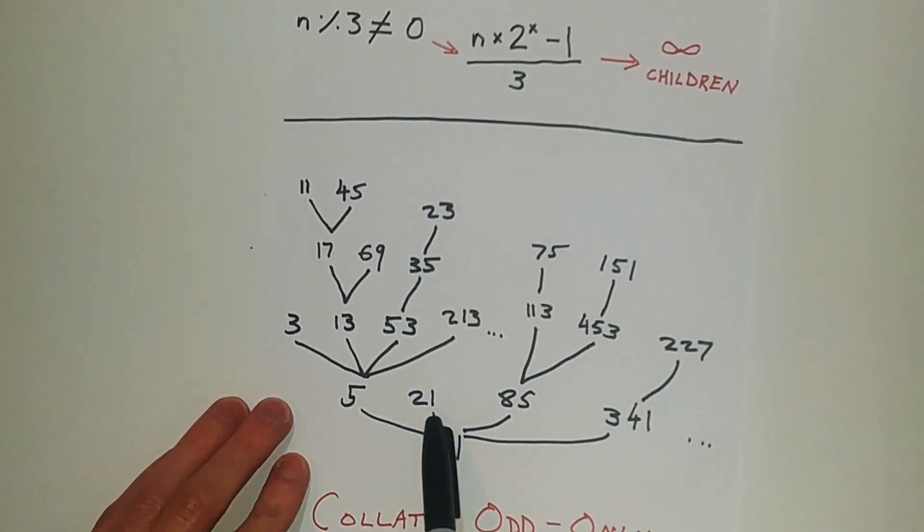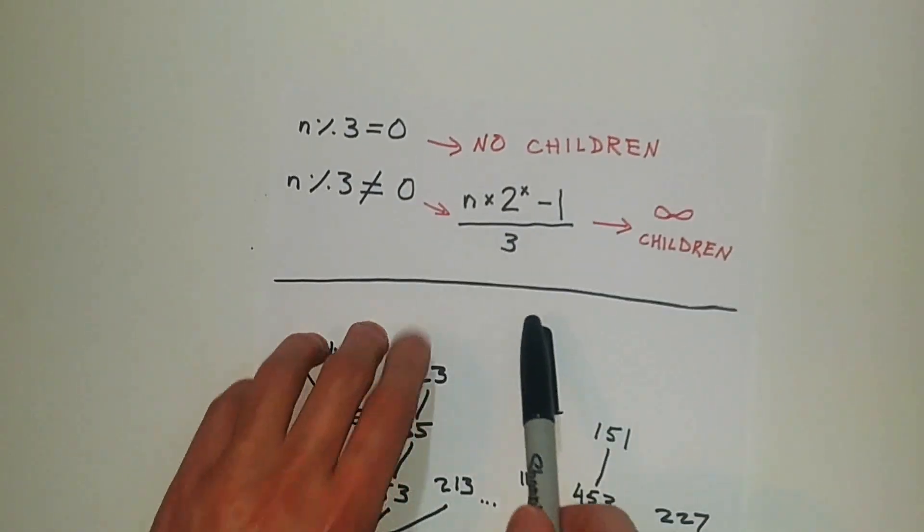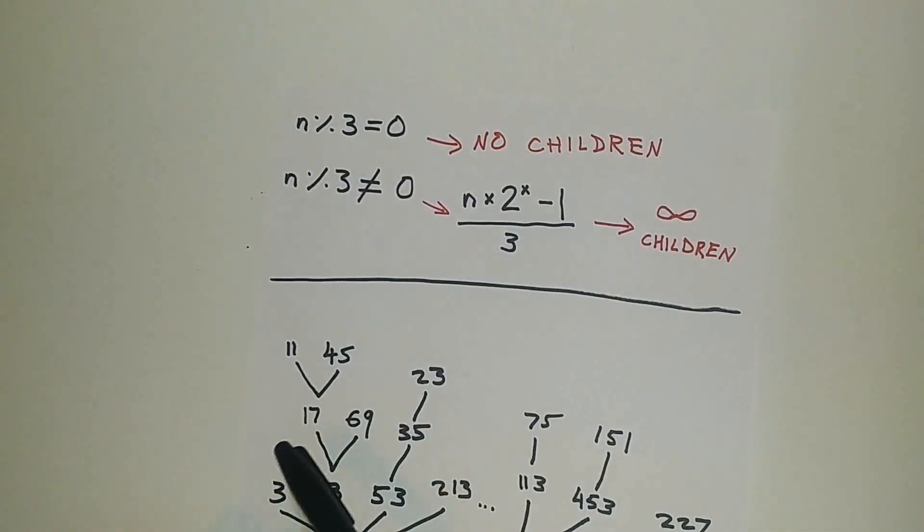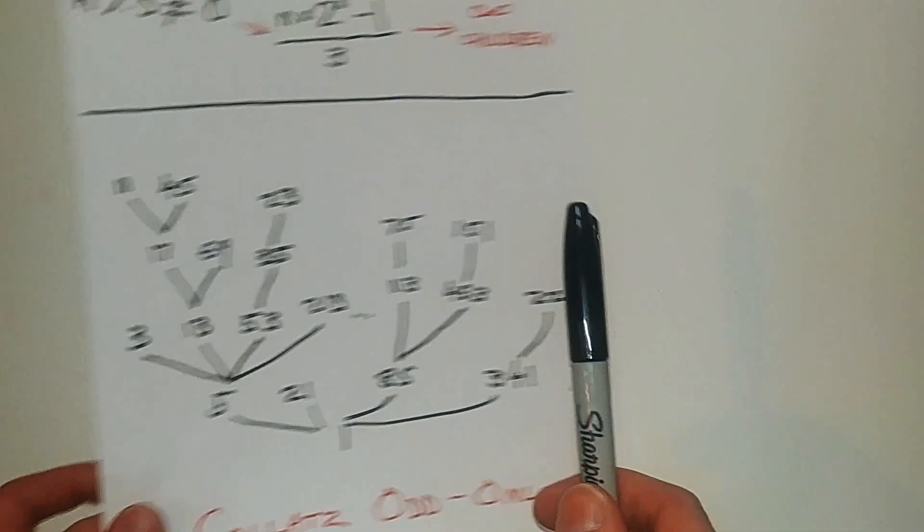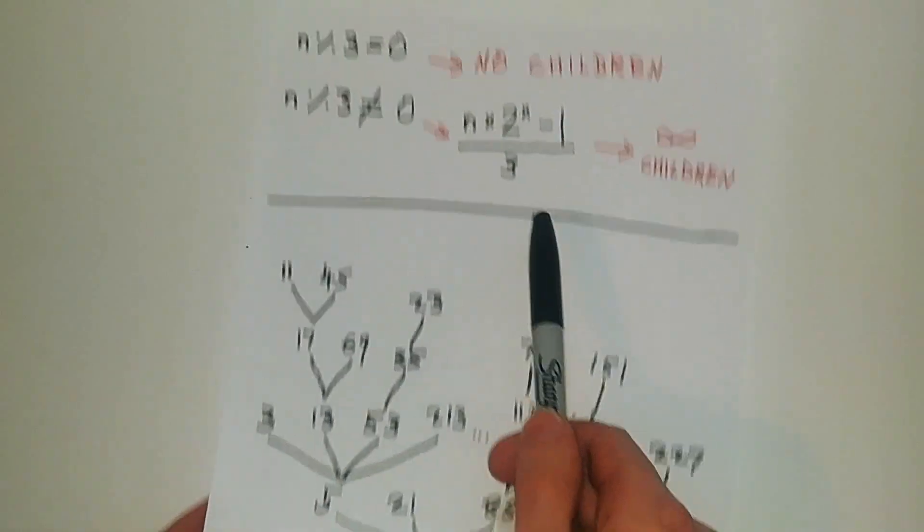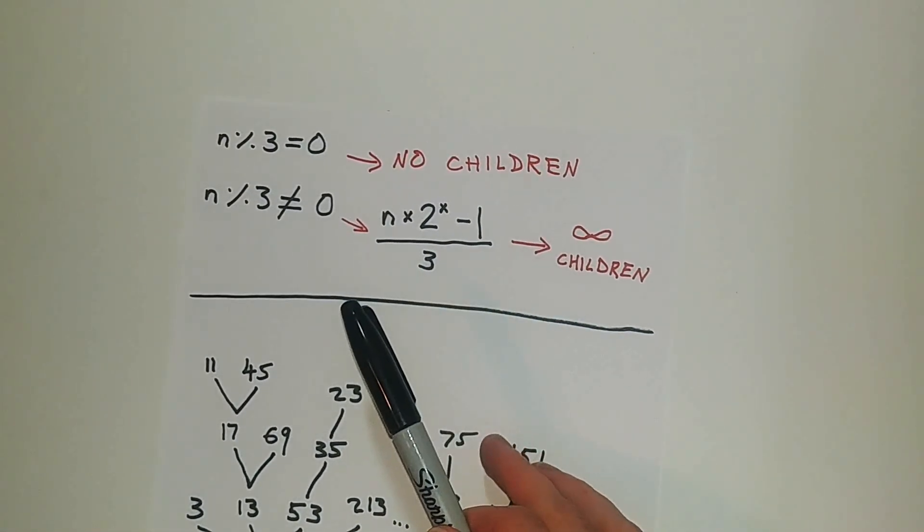So here we have 1, obviously it goes on, 1 goes to 5, 21, 85, 341. So all odd numbers will have infinite children or no children. Alright, so this is kind of annoying because how are we going to do infinite children? That's annoying. So let's actually change this tree up.